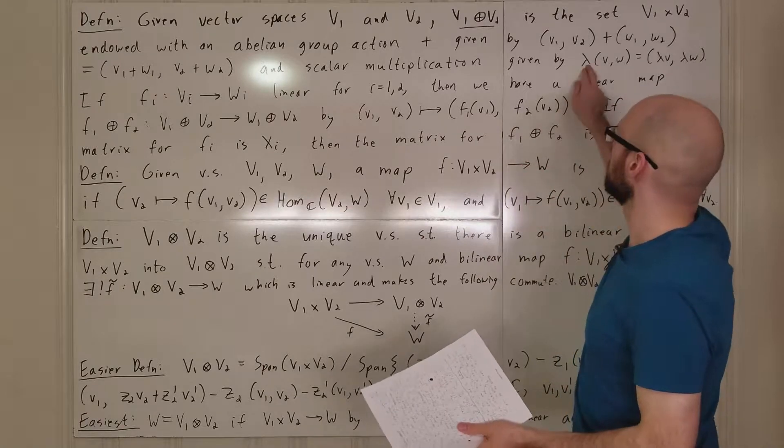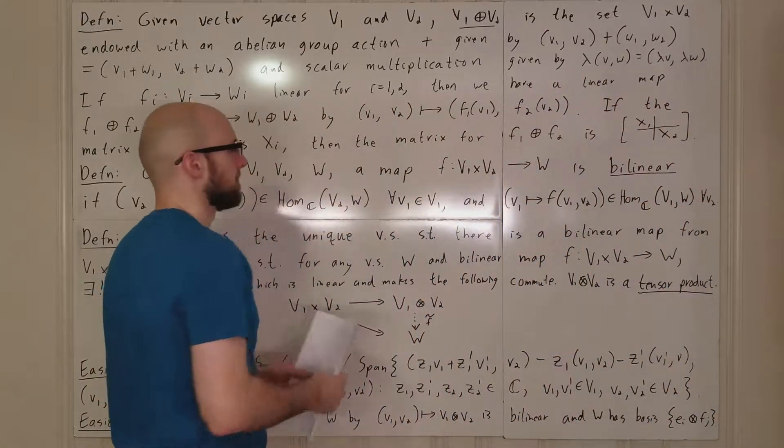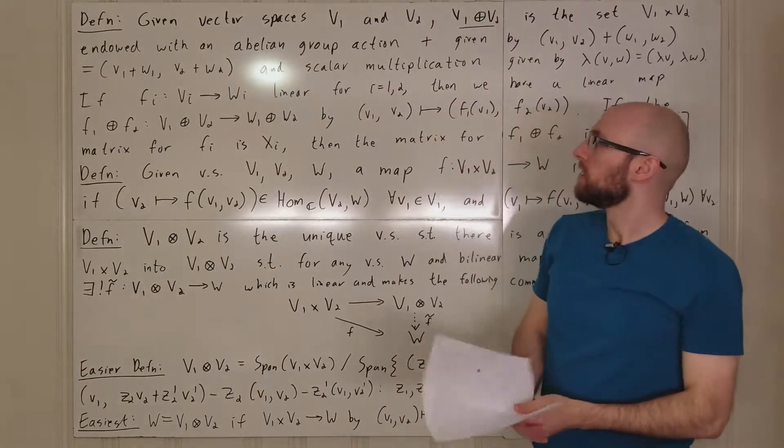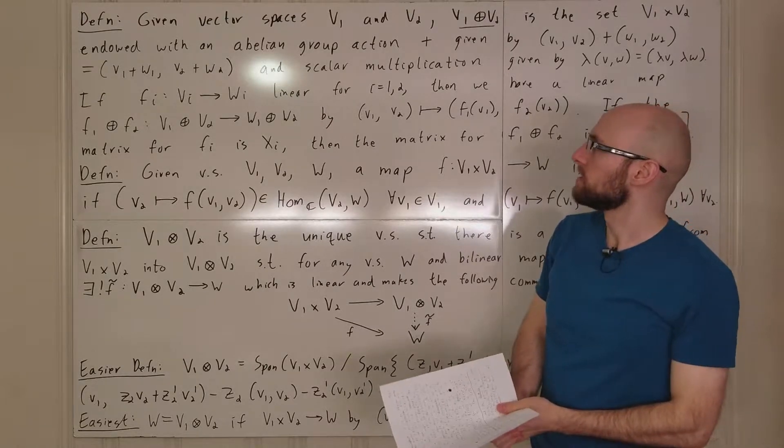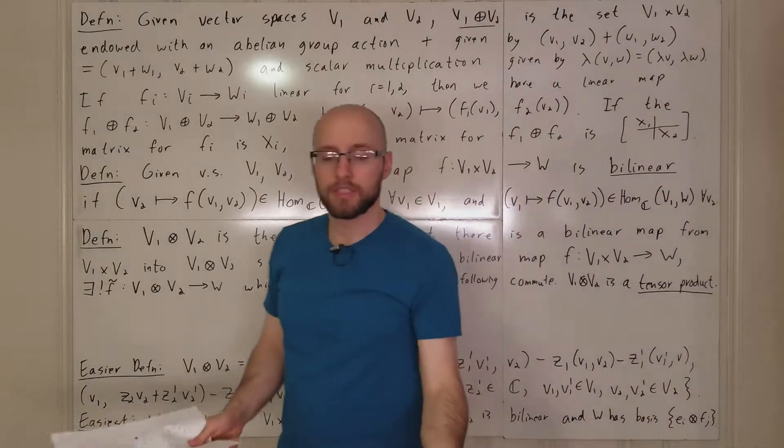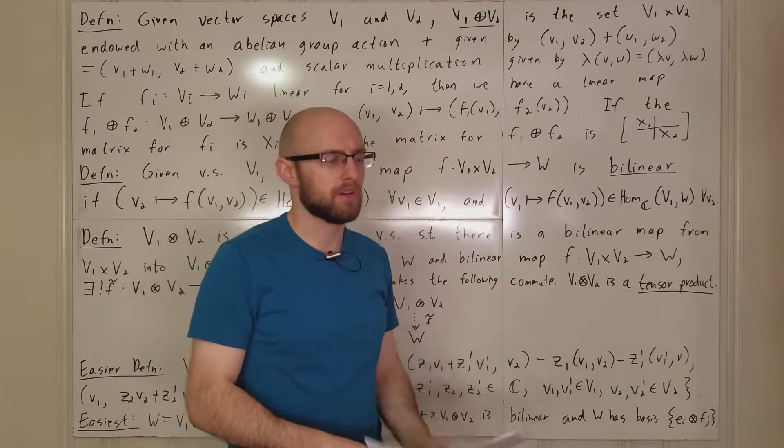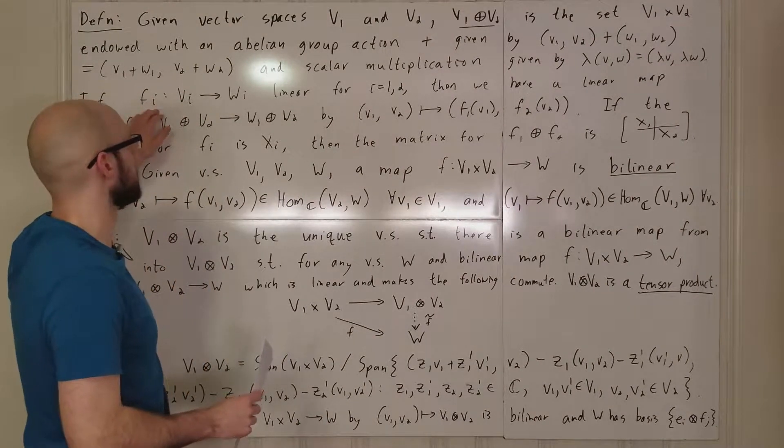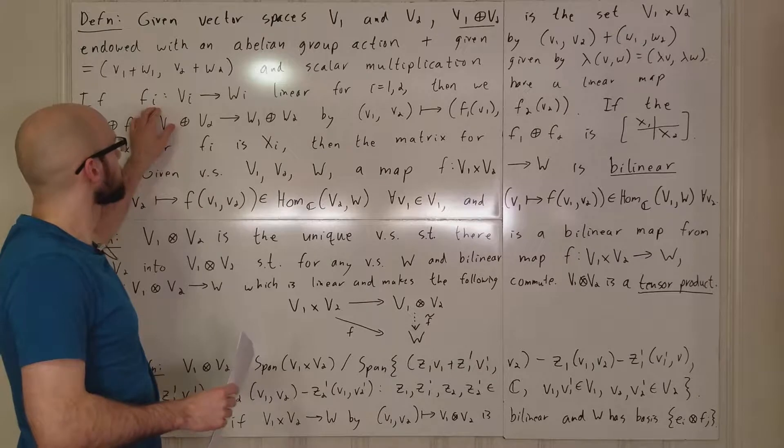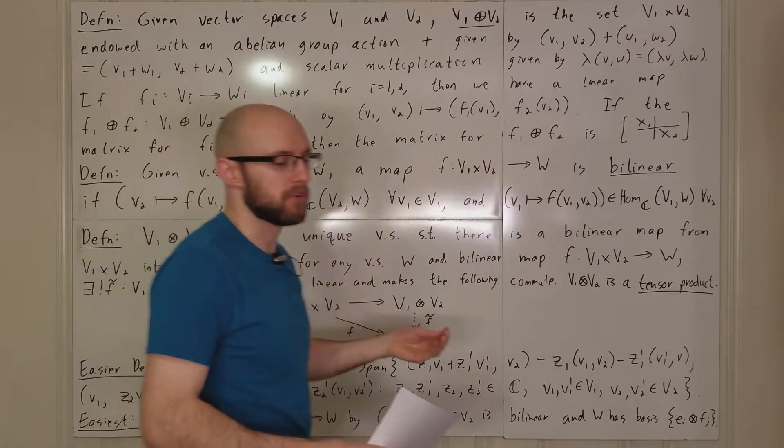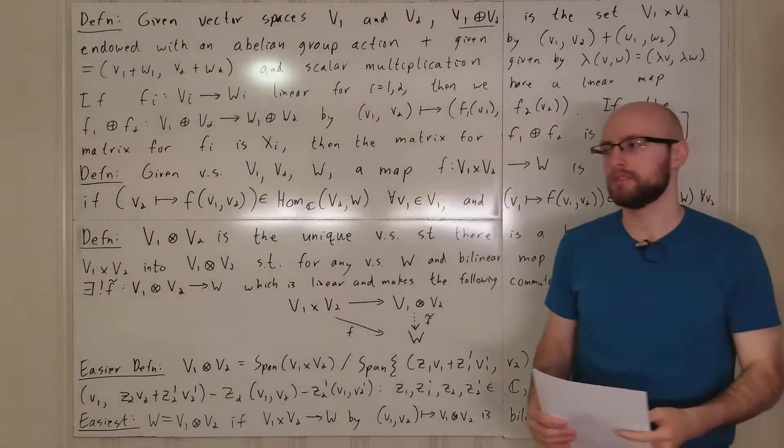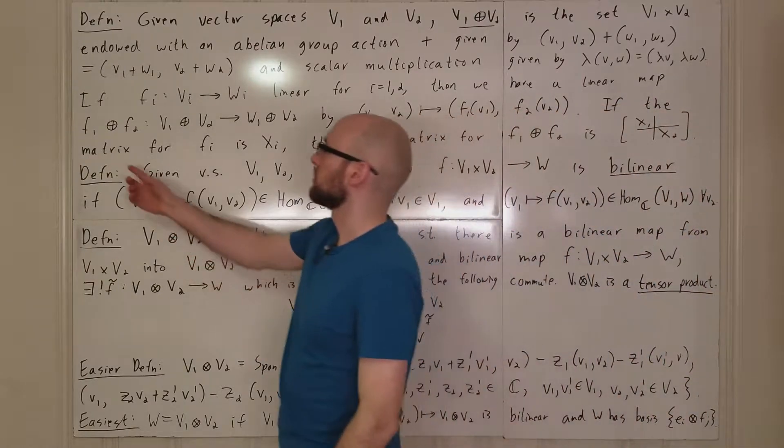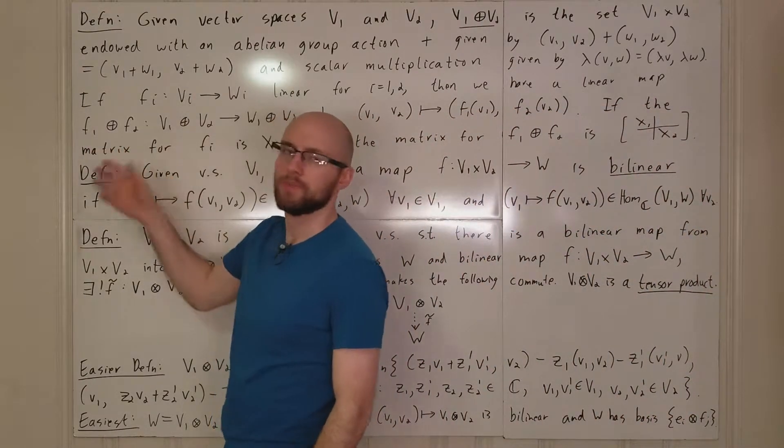We've also got scalar multiplication. If you multiply an ordered pair by some constant, it goes on the inside of both coordinates. So that is the group itself. And we can also do this on the homomorphism level, or the linear map level. For I equals 1 and 2, you could have a linear map from a vector space V1 into a vector space W1, or V2 to W2. And then you get a linear map, the direct sum of F1 and F2.